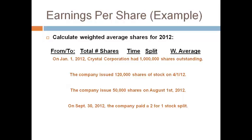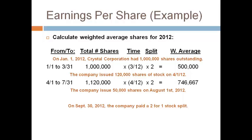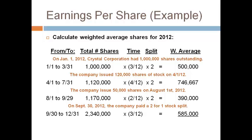Crystal began the year with 1 million shares. They had 1 million shares until April 1st when they issued 120,000 shares. The next transaction occurred on August 1st when 50,000 more shares were issued, bringing the total outstanding shares to 1,170,000. They had 1,170,000 shares until the company issued a 2-for-1 stock split on September 30th, which doubled the number of shares.